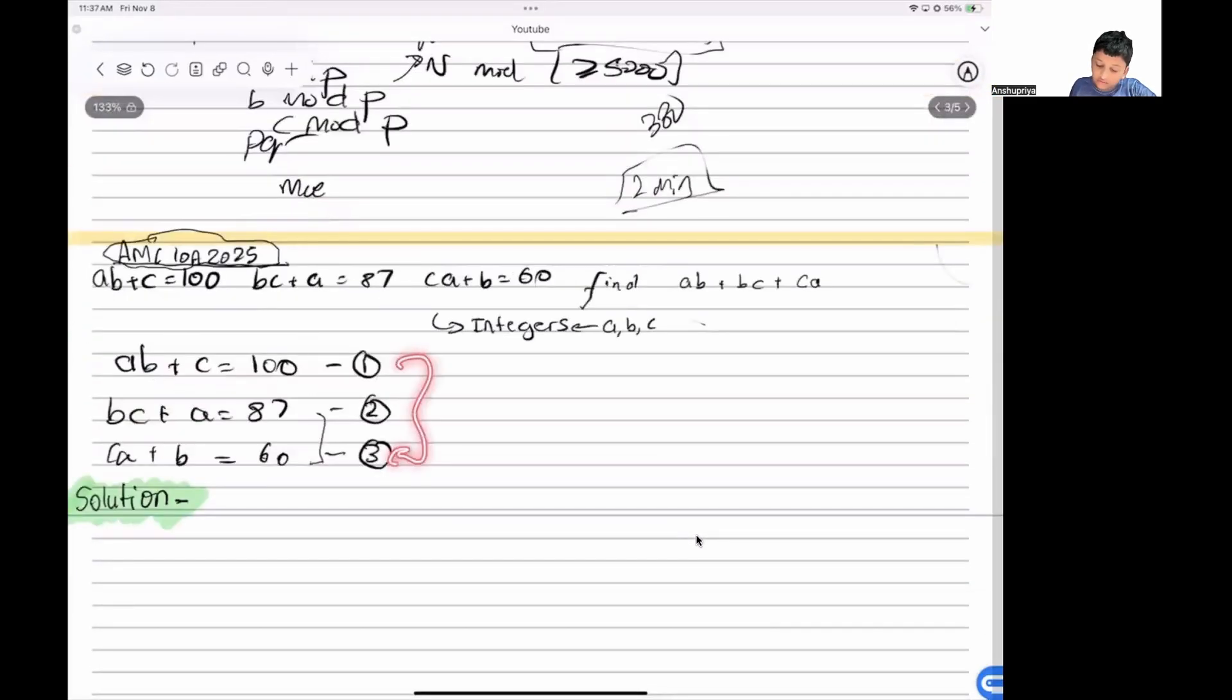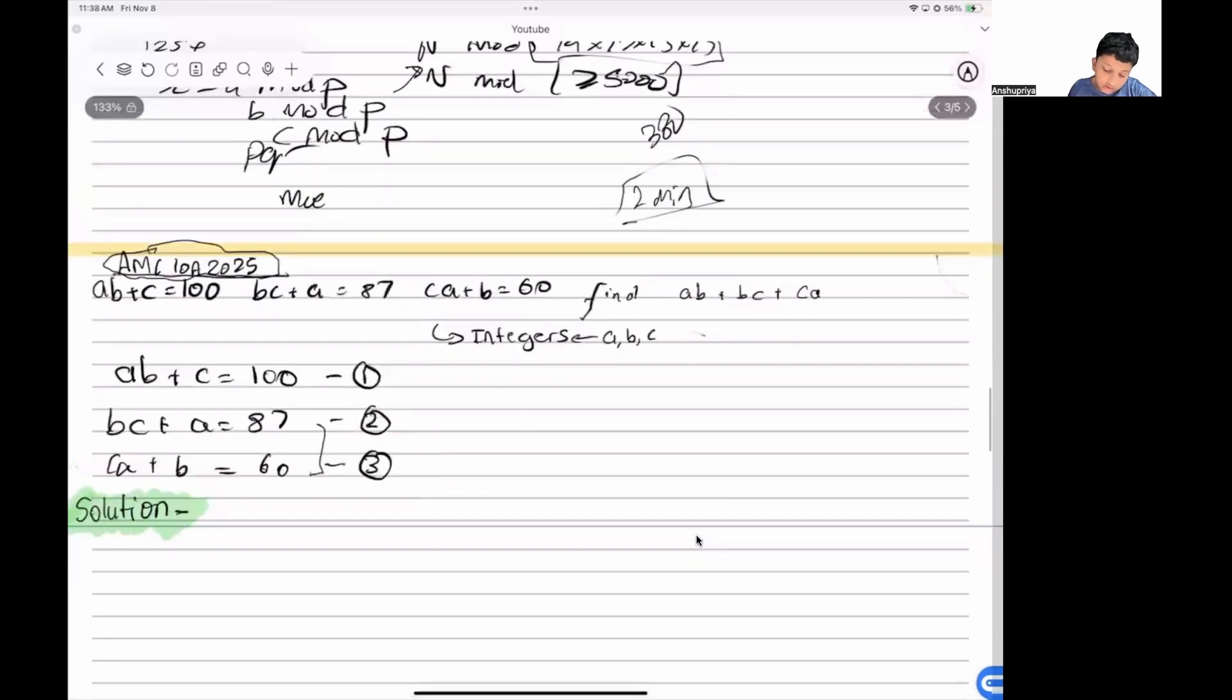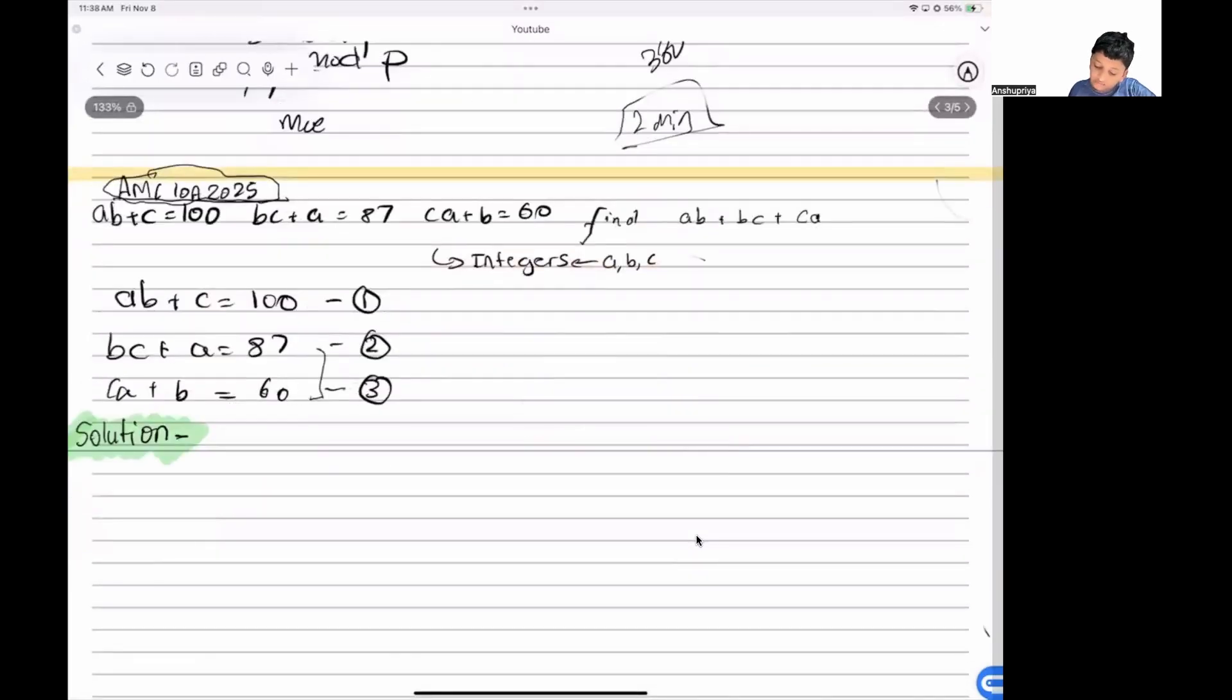First I have just numbered these equations: ab + c = 100 is equation 1, bc + a = 87 is equation 2, and similarly equation 3. Then first what we will do is we will add 1 plus 2.